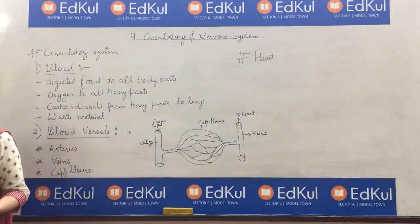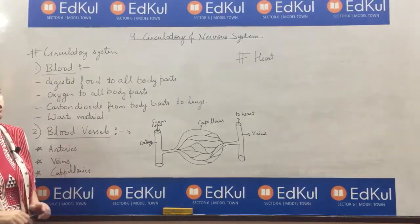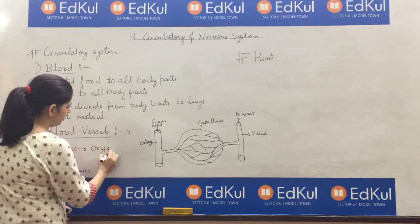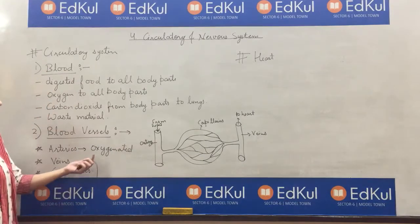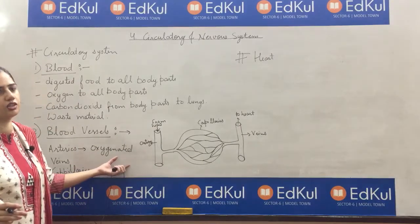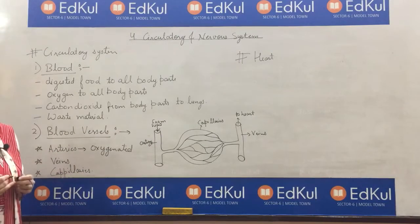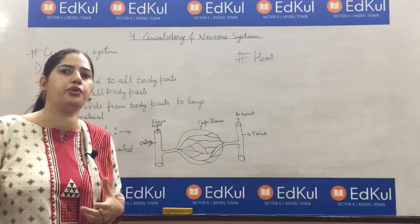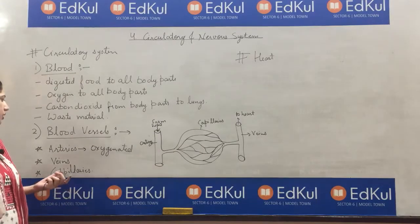First, we will discuss arteries. Arteries carry oxygenated blood. What is oxygenated? Oxygenated means oxygen-rich. So arteries carry oxygenated, oxygen-rich blood from the heart to different parts of the body.